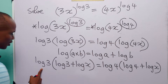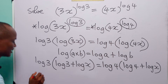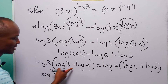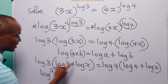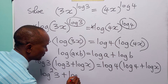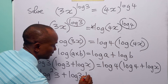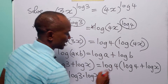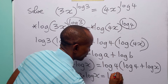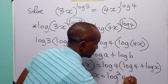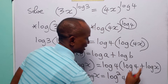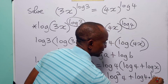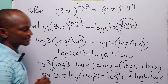When we open this bracket, we have log 3 times log 3, that is log squared 3, plus log 3 times log x. And this is equal to log 4 times log 4, which is log squared 4, plus log 4 times log x.